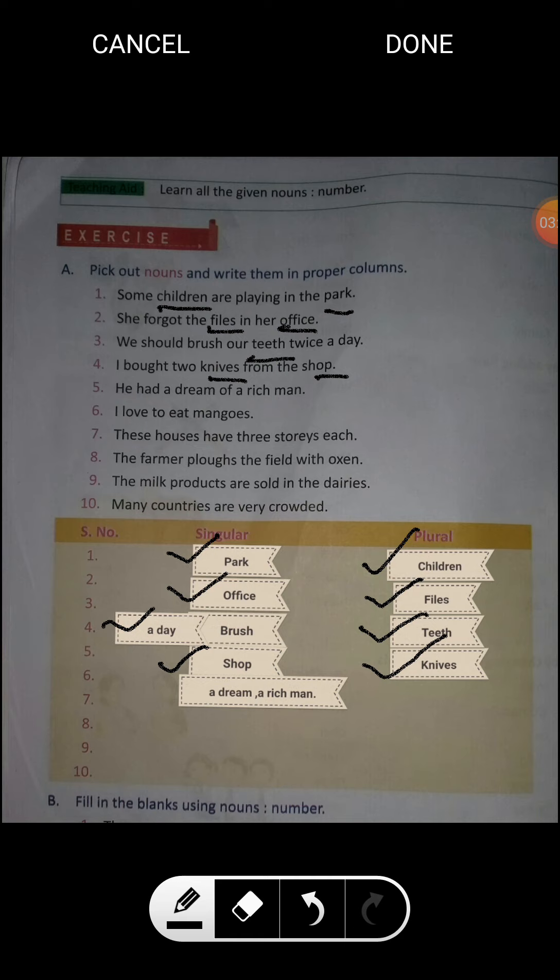Sentence five: 'He had a dream of a rich man.' A dream, a rich man. Both are singular in numbers. So we should write a dream, a rich man in singular column as I have written. So I have done five sentences for you.